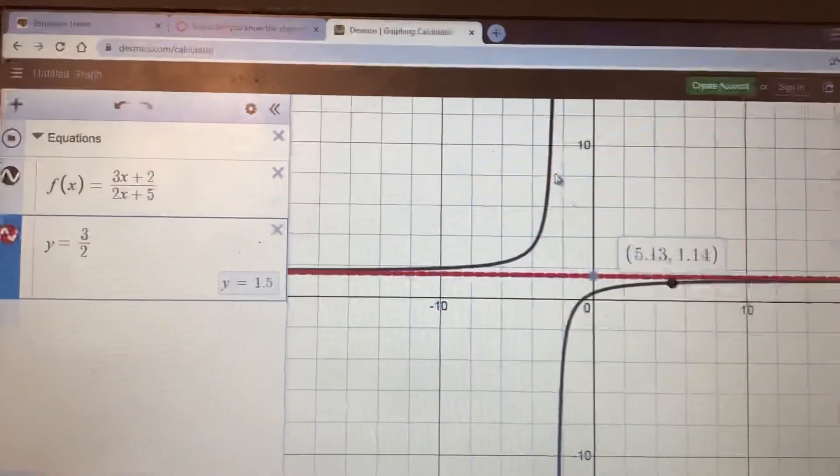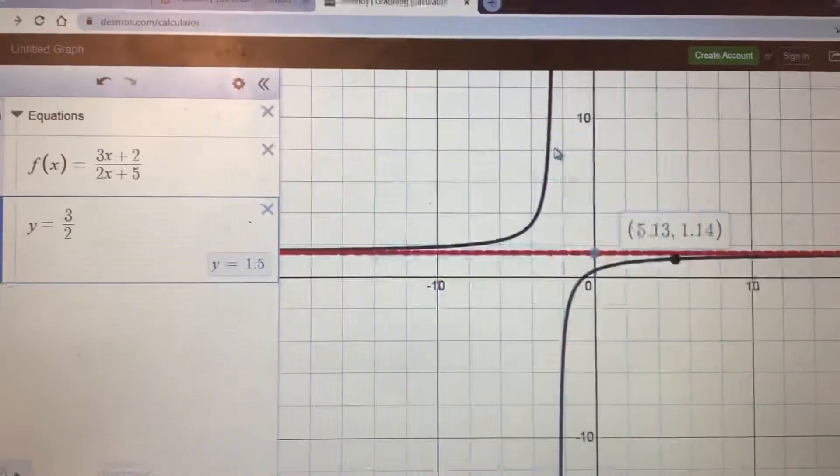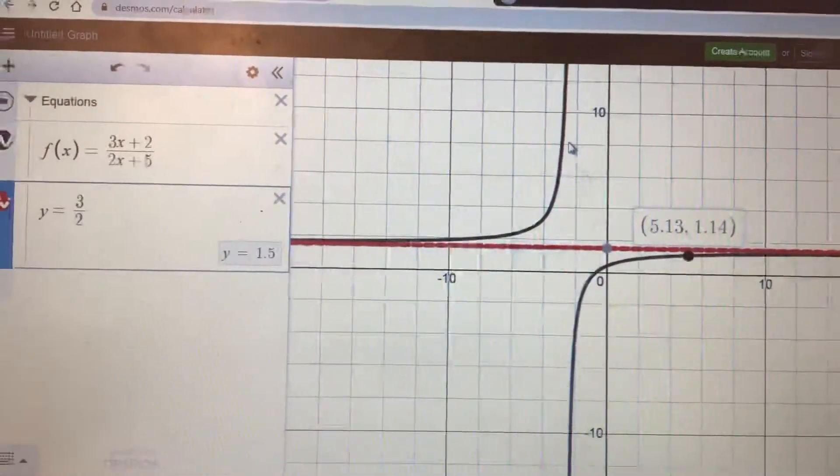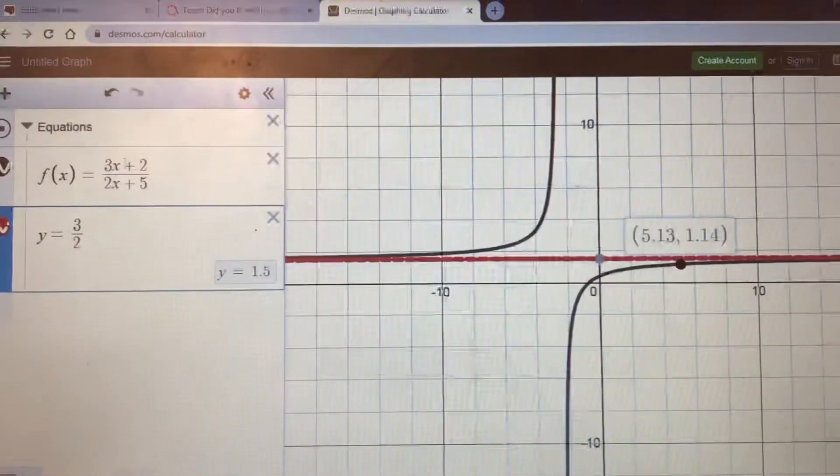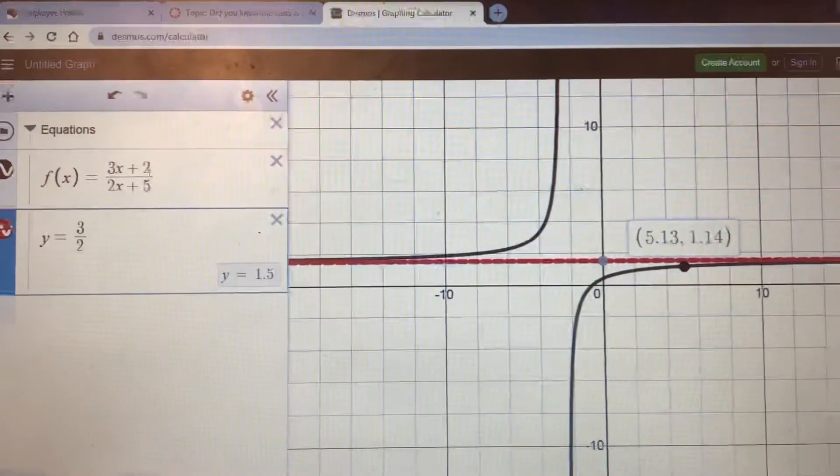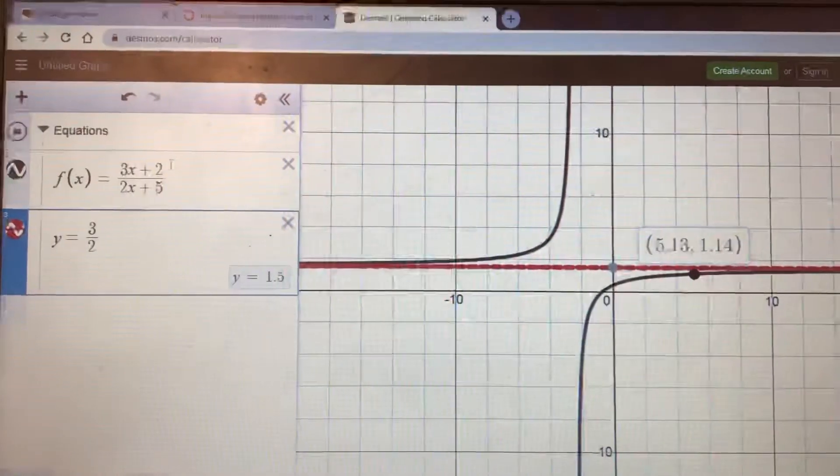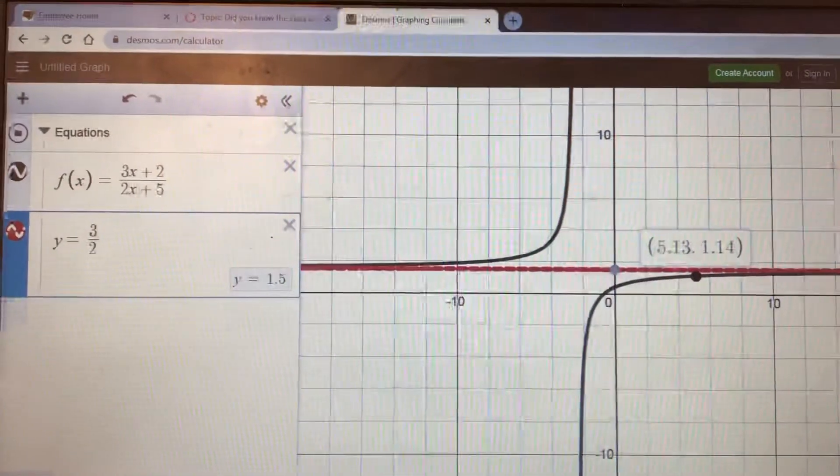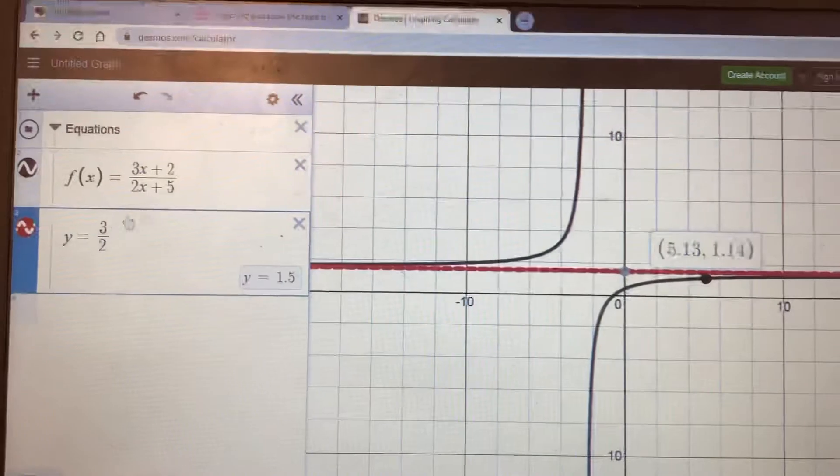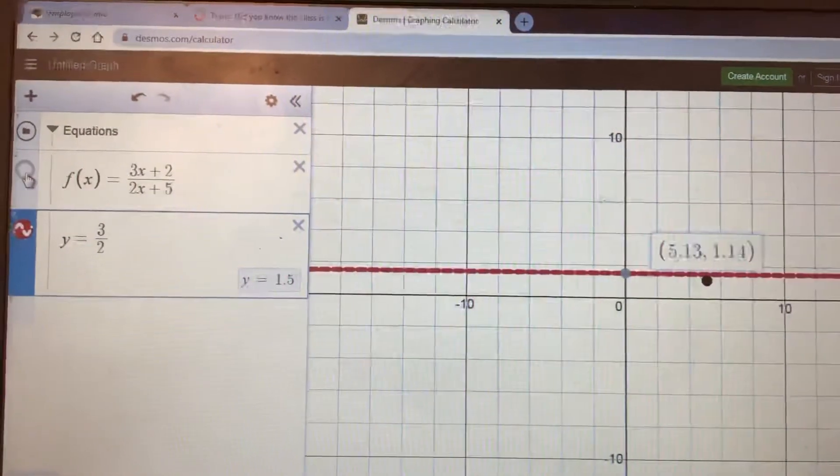Looks like it is the correct horizontal asymptote. So it seems like the horizontal asymptote has something to do with the leading coefficients, because the 2 and the 5 didn't change but the horizontal asymptote did based on the 3 and the 2.